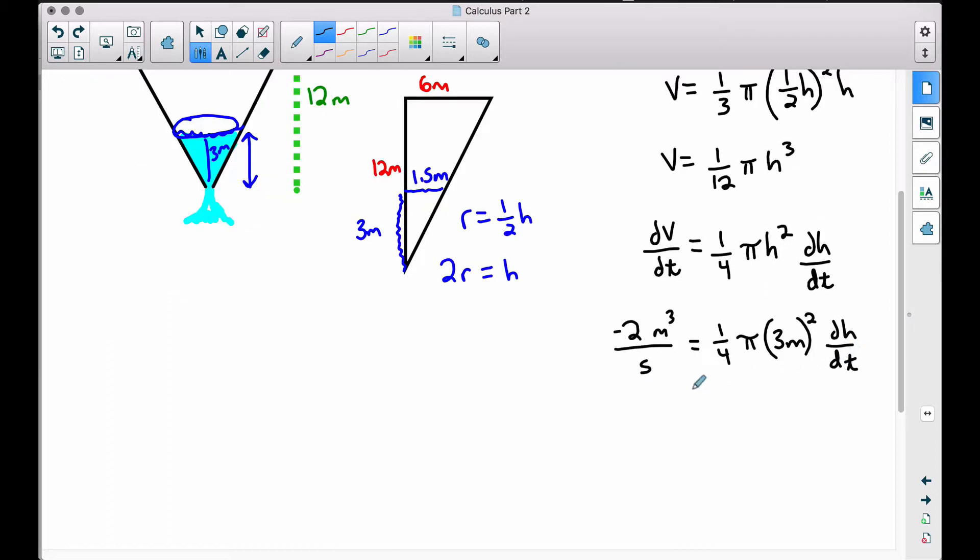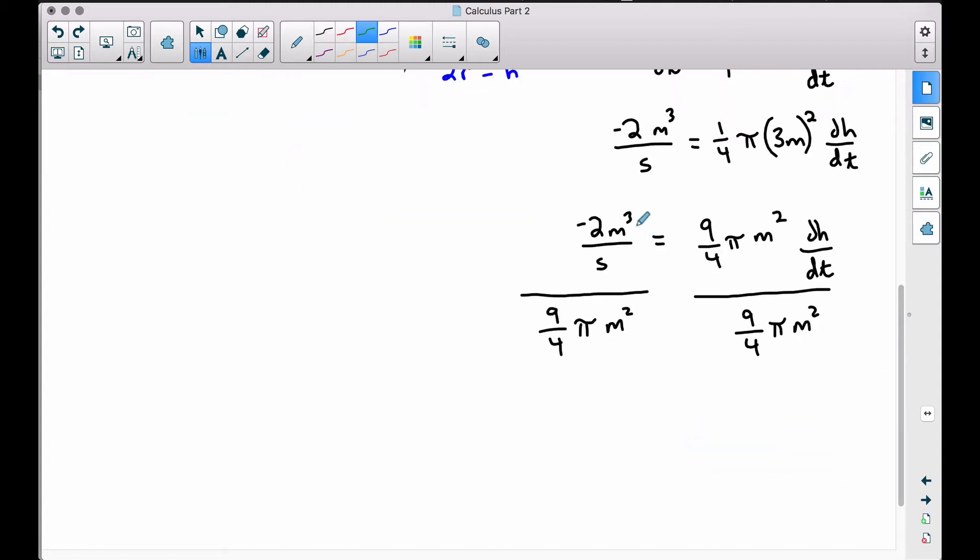Now it's time to get dh/dt by itself. So what I've done here is squared the three meters, we have nine meters squared over the four with the one-fourth, we have our pi, brought it on down, and we have dh/dt. Now I have my units here for a reason to show you how the units are going to cancel out. To get dh/dt by itself, we want to divide by all of this stuff right here. Now I know this can look a little bit overwhelming here, but really all we have is nine pi meters squared over four. All of this stuff, we're taking negative two cubic meters per second and we're dividing by this. Well, that's the exact same thing as multiplying by the reciprocal of this. So notice I have my negative two cubic meters per second right here, I'm multiplying by the reciprocal of this fraction. So now our nine pi square meters is at the bottom, our four is at the top.